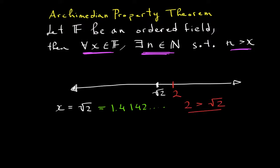Now if I choose another number, let's choose 17.5, which is not a natural number, then I can just find you 18, which is a natural number. So 18 is clearly greater than 17.5.